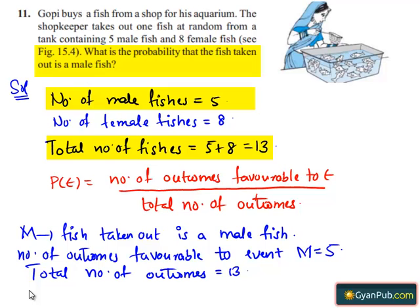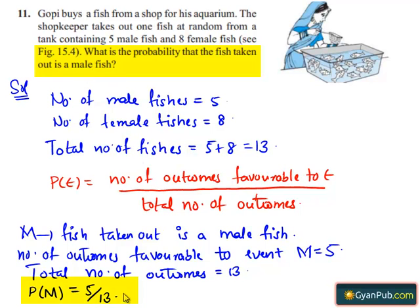Now, we have probability of event M, P(M), equals the number of outcomes favorable to event M which is 5 divided by total number of outcomes that is 13. Therefore, the probability that the fish taken out is a male fish is 5/13.